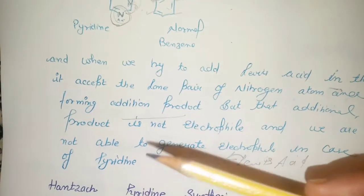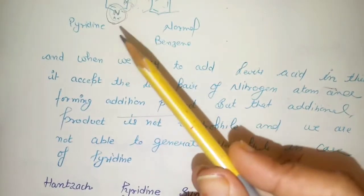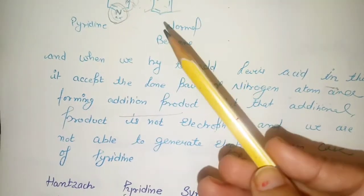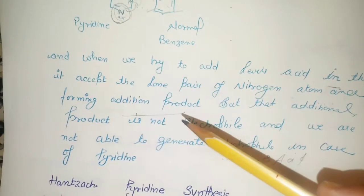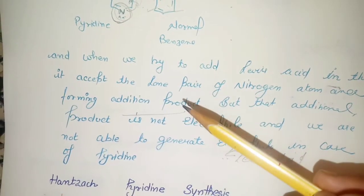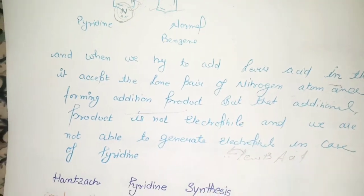Automatically we can say that with this process or with this compound, we are not able to generate electrophile in case of pyridine. That is the answer to your question which is asked in previous year question papers. Let's move on.